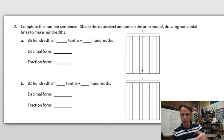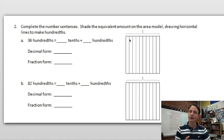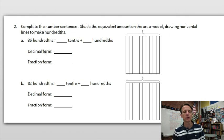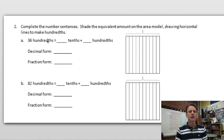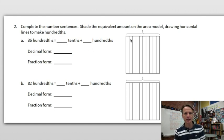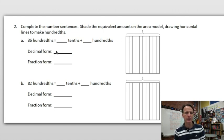In number two we're going to complete the number sentences, shade the equivalent amount on the area model drawing horizontal lines to make hundredths. One idea — and it doesn't mention it, but we need to write in decimal and fraction form as well. So, 36 hundredths — let's think about that and write it in decimal form.